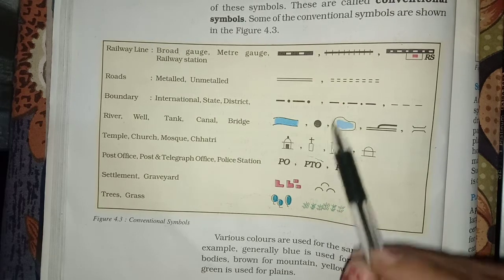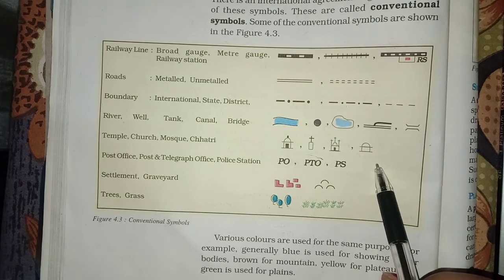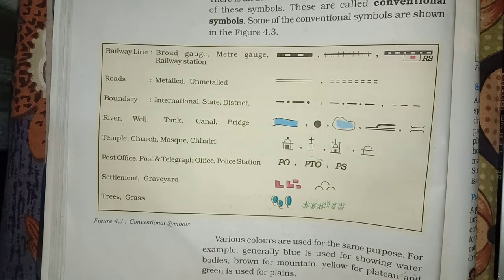Trees, this is sign of trees, grass, this is a sign of grass. Student, I hope you have understood this, these are conventional symbols and with the help of symbols we can read the map easily. It's enough for today, have a nice day.